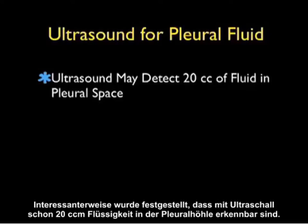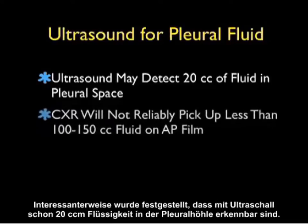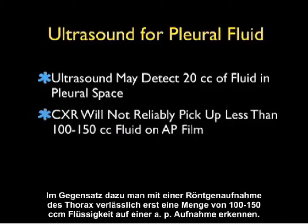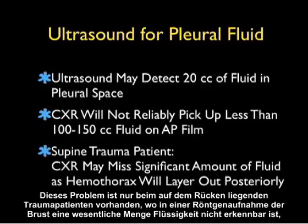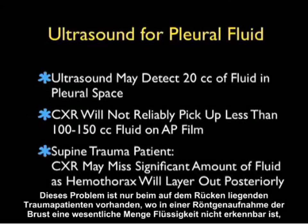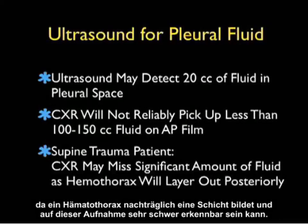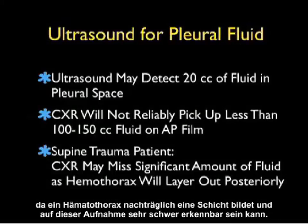Interestingly enough, ultrasound has been found to detect as little as 20 cc's of fluid within the pleural space. In contrast, a chest x-ray will not reliably pick up less than 100 to 150 cc's of fluid on an AP film. This problem is only compounded in the supine trauma patient, where a chest x-ray may miss a significant amount of fluid, as a hemothorax will layer out posteriorly and can be very difficult to detect on this film.